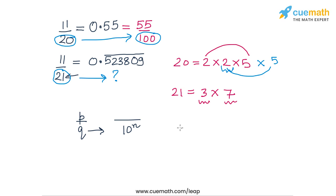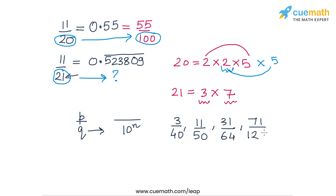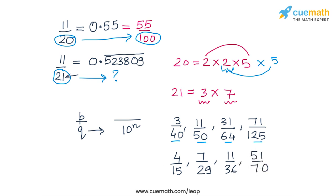Using this result, we can immediately tell whether a rational number will have a terminating or non-terminating representation. For example, numbers like 3 by 40, 11 by 50, 31 by 64, and 71 by 125 will all have terminating representations because their denominators have only 2s and 5s as factors. On the other hand, numbers like 4 by 15, 7 by 29, 11 by 36, and 51 by 70 will all have non-terminating representations since each denominator has factors other than just 2s and 5s. This completes our discussion of this question.